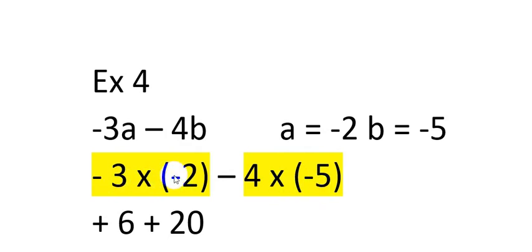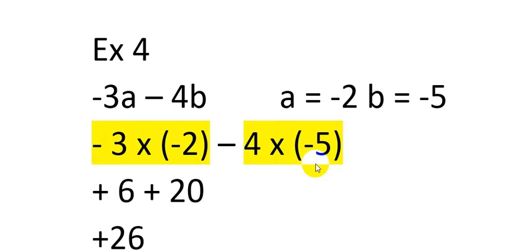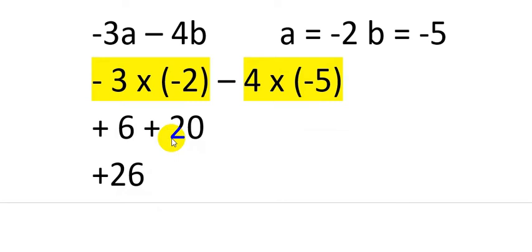Multiplying the signs: minus into minus gives plus, so we get plus 3 multiply by 2 which is 6. For the second term, minus into minus is also plus, so plus 4 multiply by 5 is 20. The summation is plus 6 plus 20, which equals plus 26. That is the answer for this algebraic expression after substitution.